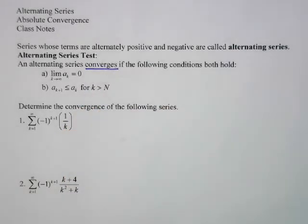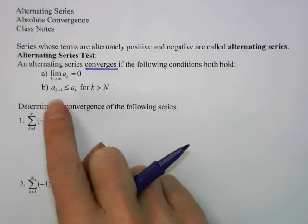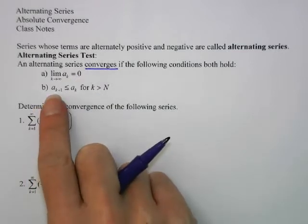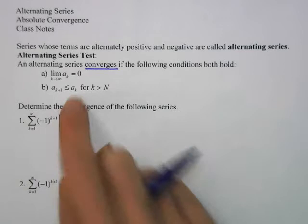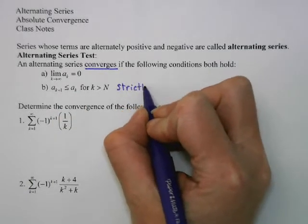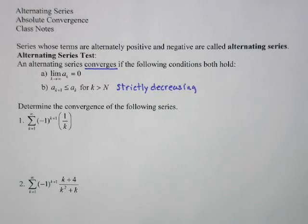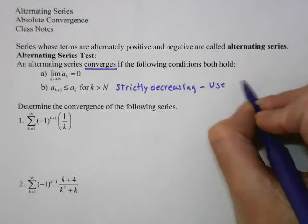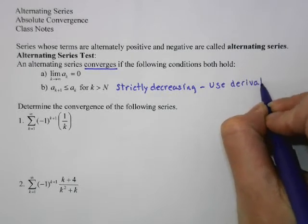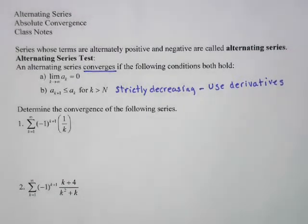The test shows that a series converges if two things hold: that the limit of the nth term goes to zero, and that for any term, it is less than the term before it — meaning it's strictly decreasing. We have a tool to determine if something is decreasing: we're going to use the derivative. Because if the derivative is negative, that means it's going to be decreasing.